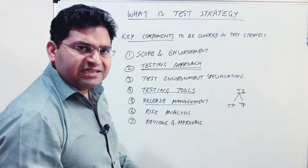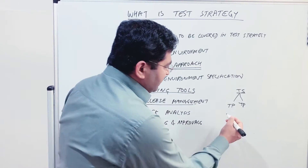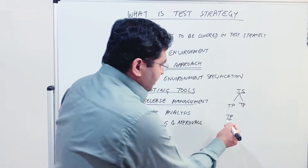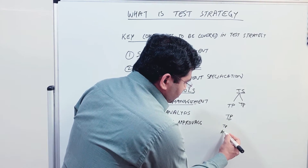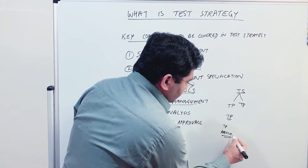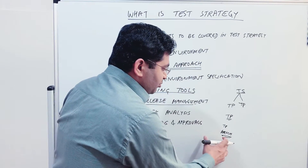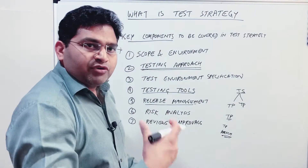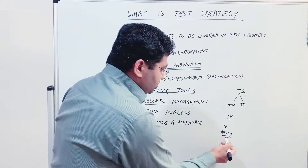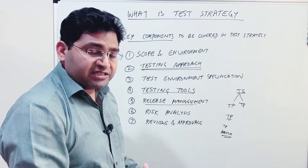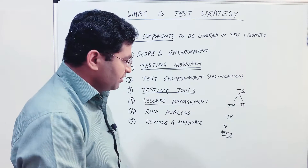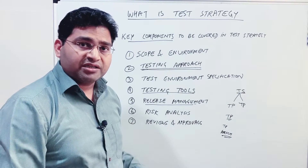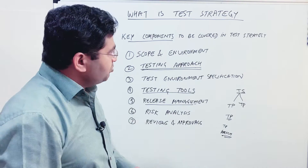In small organizations, the testing approach is elaborated within the test plan's approach section, with additions made per project details. In large organizations, each project's test plan applies and extends the test strategy's approach. That is all about the test strategy document — why it is important and how the hierarchy of test strategy and test plan works.